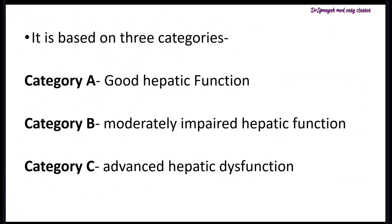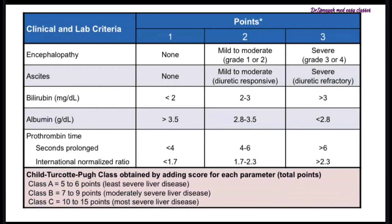To calculate the Child-Pugh score, we take into account five parameters. For encephalopathy: if the patient is well-oriented, walking, talking, sleeping well, and has no mental problem, score is 1. If the patient is in grade 1 or 2 — mild to moderate — with confusion and calculation difficulties but able to communicate with the physician, score is 2. If the patient has altered mental status, tremors, disorientation, delusions, or lack of memory, score is 3. Hepatic encephalopathy is caused by elevated ammonia levels reaching the brain.